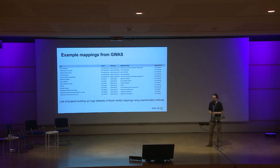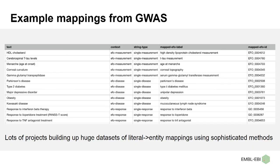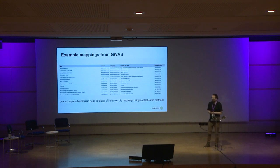For example, this is from our GWAS project at EBI — a real example of some manually curated data. We've got the text strings on the left, then the context, which can define things like the branch of the ontology we want to look in, and then the mapped label and the mapped identifier. Each project has different contexts, so they want to map to different sets of terms and come up with sophisticated methods to do so.